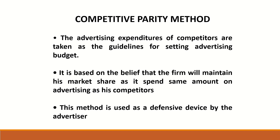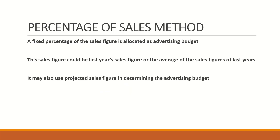This method is used as a defensive device by the advertiser. The third method is the percentage of sales method. A fixed percentage of sales figure is allocated as advertising budget. This sales figure could be last year's sales figure or the average of the sales figures of last year's. It may also use projected sales figure in determining the advertising budget.